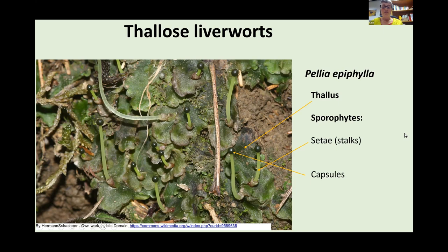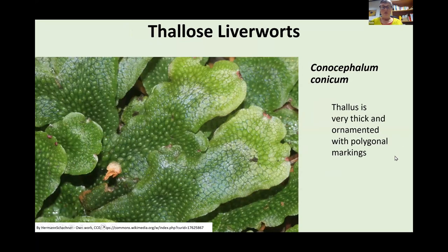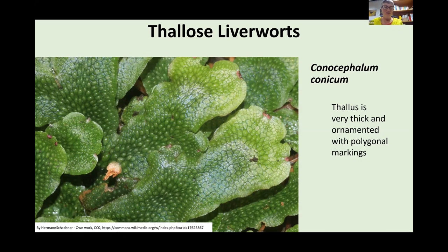Liverwort capsules are very simple — they're just spherical, and when they need to open, they just split into four and the spores come out. One thing about thalloid liverworts is that you can have different types of thallus characteristics to help identify them. Some liverworts, like Conocephalum, have a very thick thallus with ornamental features — it looks like crazy paving — with very distinctive polygonal markings that make it quite easy to pick out.